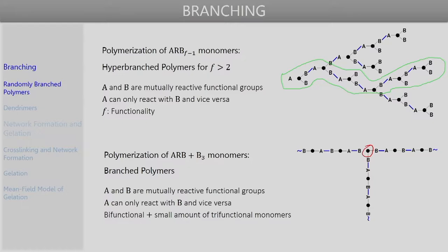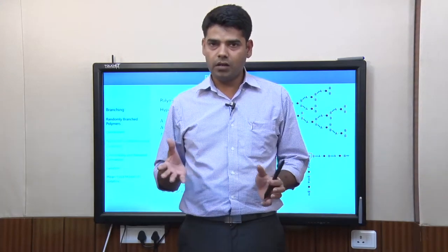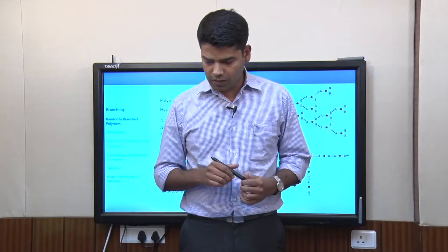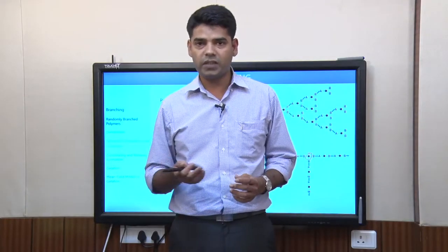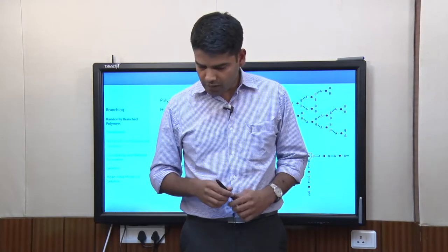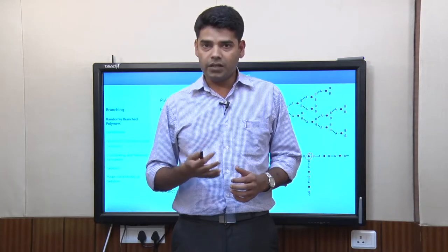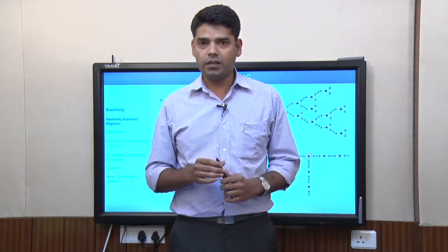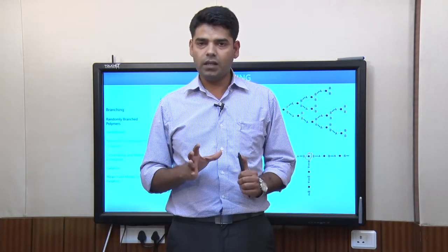Other chains growing in parallel will also have a single branch point each. This monomer combination leads to branched polymers, but these are not highly branched — they usually contain a single branch per chain. Branching requires at least one monomer with functionality greater than 2; if all monomers have functionality 2, linear polymers result. The cases considered so far involve random branching — no order in the type of branching taking place.